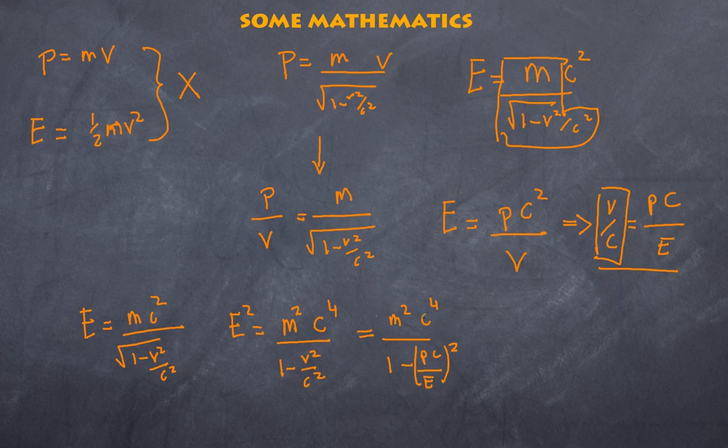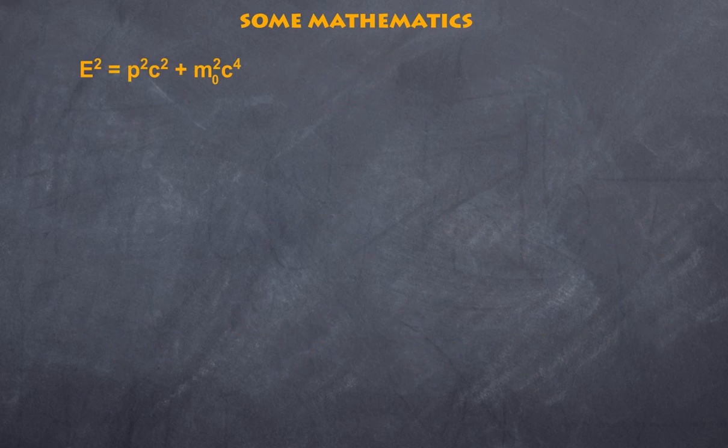If I rearrange that I get the total energy squared is equal to the momentum squared multiplied by c squared plus m naught which is the rest mass squared c to the power of four. So this formula here is a much better relationship between energy and momentum because it allows for relativity.